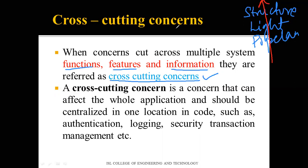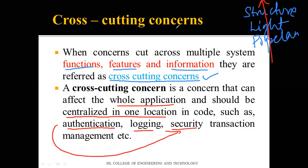A cross-cutting concern is a concern that might affect the whole application and should be centralized in one location in the code. Examples include authentication for a specific department, login management, and transaction management — authentication is directly related to security, and secure fund transfers depend on authenticated transactions.